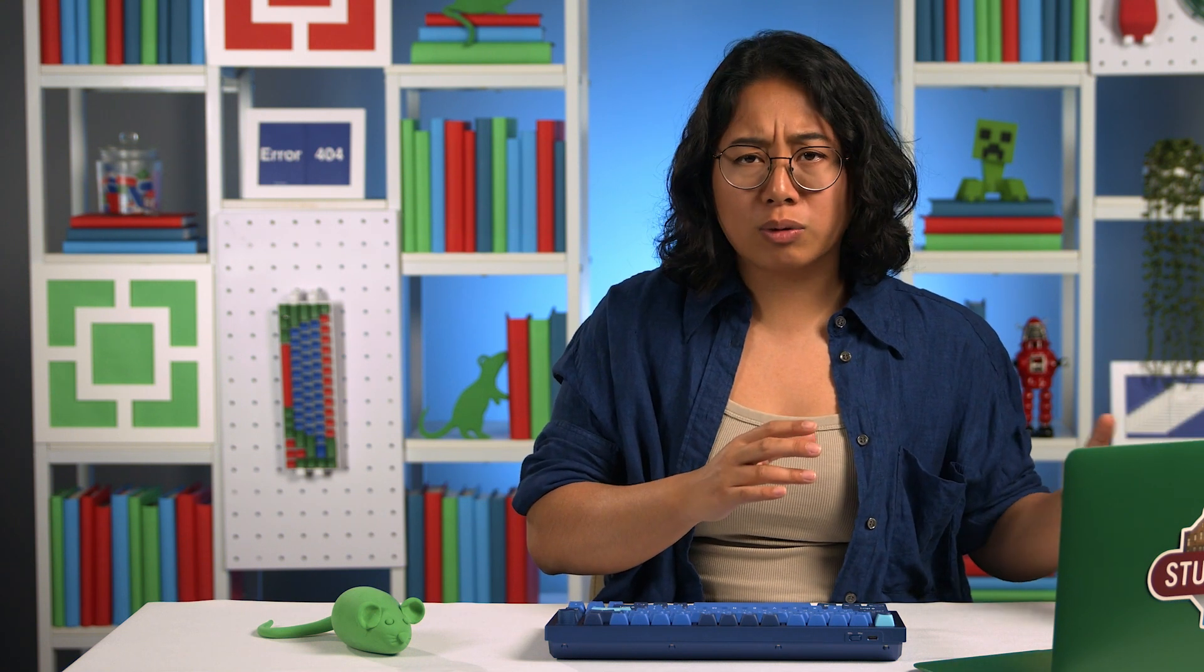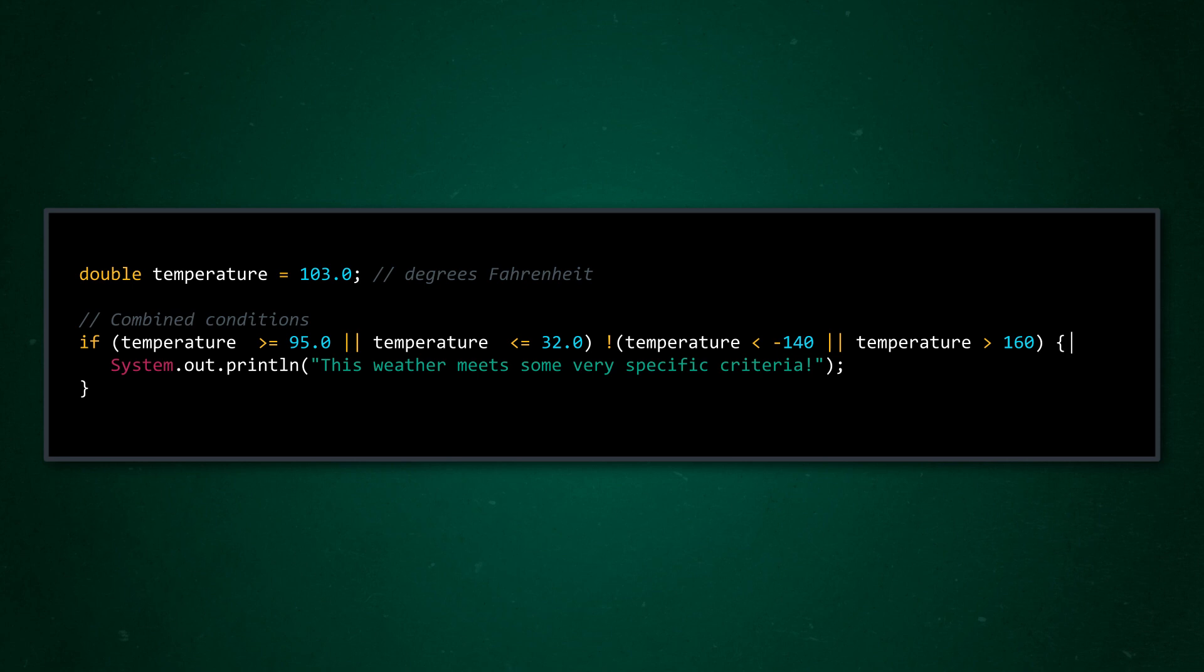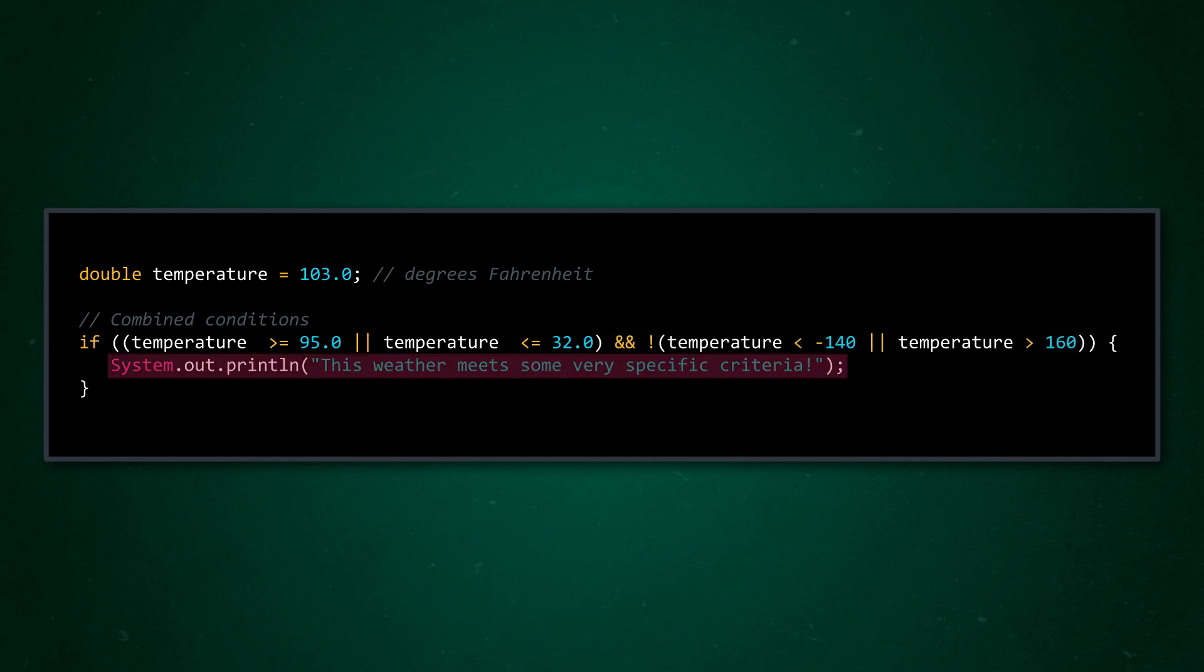After you get the hang of this, you can combine multiple logical conditions together. Take that warning from before, where we sent a message if the temperature was either extremely hot or extremely cold. If there is some issue with the thermometer that makes it read out an impossible temperature, we don't want to send out a warning that might frighten people. We can expand our expression to exclude temperatures above 160 degrees Fahrenheit and below negative 140 degrees, since those are beyond previously recorded records across the world. So, we have our original compound condition that uses OR to check for extreme temperatures. But now we'll make another expression that checks if the temperature is in the range that we consider a malfunction using the same method. But we'll put this new condition in parentheses with the logical NOT in front of it, since we're making sure that the temperature isn't in the malfunction range. Then, we can put our first compound conditions in parentheses as well, and combine the two using AND. Now this reads: if the temperature is in a dangerous range and isn't in an impossible range, then print out a weather warning.